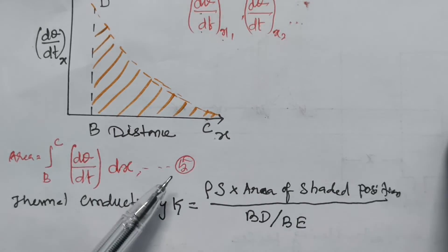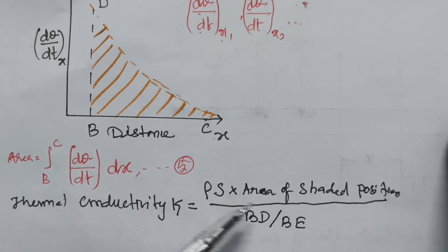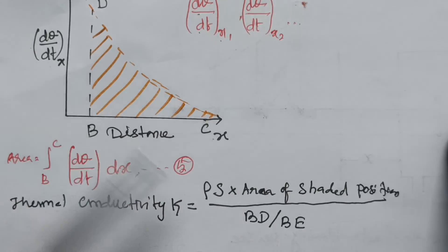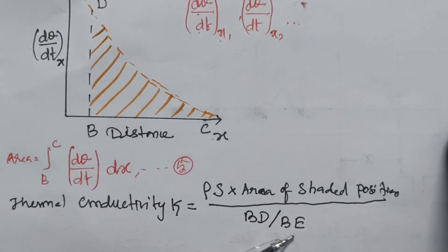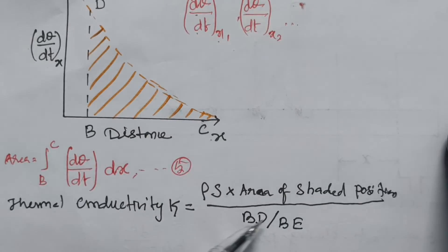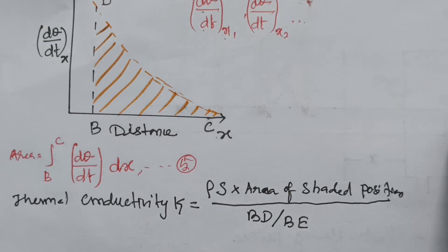Substituting Equations 4 and 5 into Equation 3, the thermal conductivity K equals ρS times the shaded area (that is, the integral from B to C of (dθ/dt)·dx) divided by BD/BE (which is the dθ/dx value). By finding the shaded area and BD/BE from the graphs, we can determine the thermal conductivity of a good conductor. The limitations of this method are: it is tedious to draw three graphs, it takes a long time to complete the experiment, and the heat distribution is not uniform throughout the bar in both static and dynamic experiments.